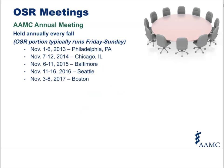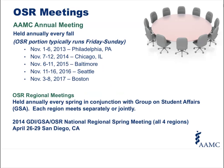OSR meetings are an important part of your function. The annual meeting is held every fall, and typically the OSR portion runs from Friday through Sunday. This year we're going to be in Philadelphia. There are also regional meetings, held annually every spring in conjunction usually with the Group on Student Affairs. Each region meets separately or jointly depending on the year. In 2014, it's going to be a national regional meeting where all of the regions come together in San Diego, April 26th through the 29th, sponsored jointly between the Group on Diversity and Inclusion, the Group on Student Affairs, and the OSR.